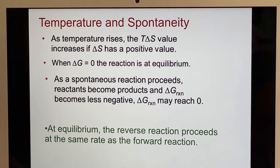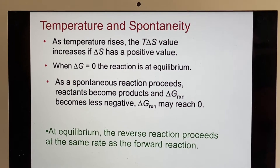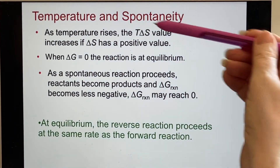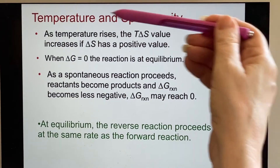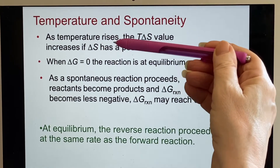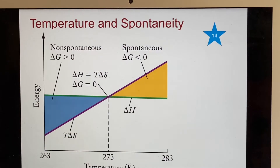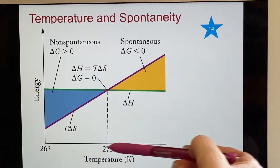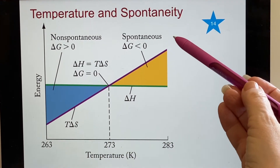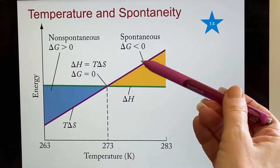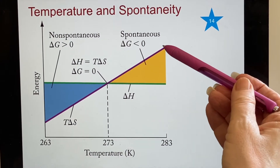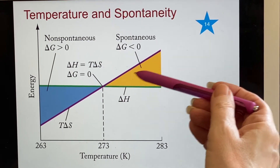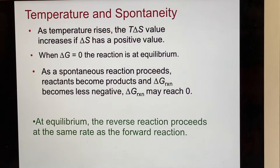When thinking about temperature and spontaneity, we discover that when temperature rises, TΔS increases if ΔS is a positive value. That's because ΔS is the slope. Looking at the previous graph, here's ΔS with a positive slope, so as T increases, the line goes up. Since that's the part being subtracted, ΔH minus this number gives a negative number, and you'll have a spontaneous reaction.